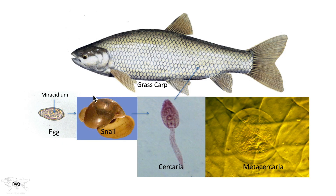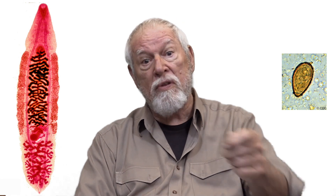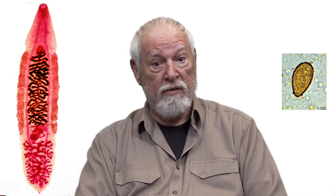For illustration purposes, here are the actual stages of the infection. Here's the miracidium inside the egg, and here's the snail host. The snail host gives rise to the cercaria, which then crawls underneath the scale. Here is the way it actually looks — these are the scales of the fish, and this is the rounded-up metacercaria. That's the infectious stage for humans and for dogs and cats as well.